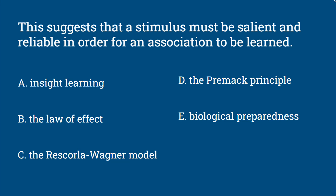Question 5: This suggests that a stimulus must be salient and reliable in order for an association to be learned. Is this insight learning, the law of effect, the Rescorla-Wagner model, the Premack principle, or biological preparedness?